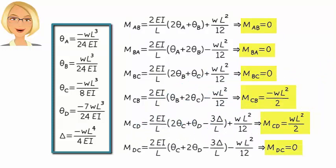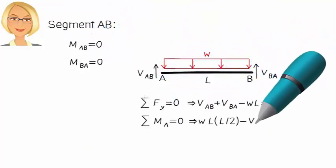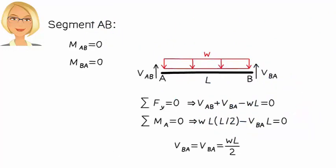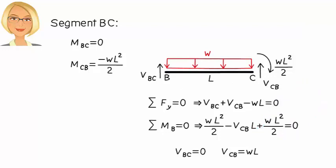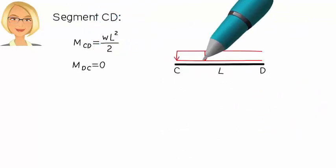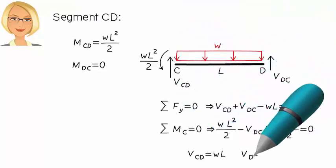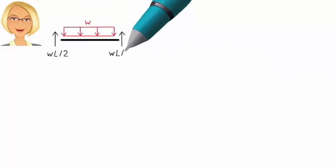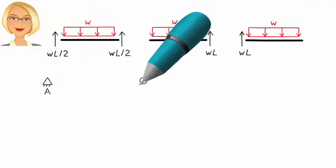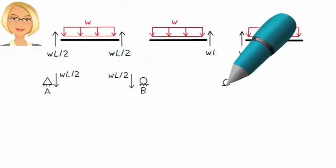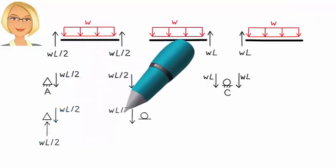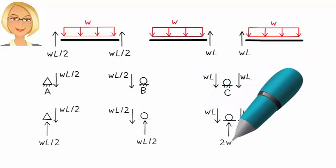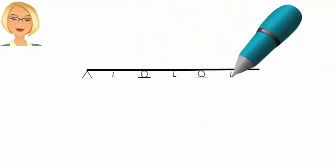Now, draw the free body diagram for each segment and determine member end shear forces. For segment AB, we get the values shown. For BC, we have the shear forces shown. And for CD, we can write the corresponding equations. Finally, transfer the computed shear forces to the joints and determine the support reactions, like this. So, here are the support reactions for the beam.